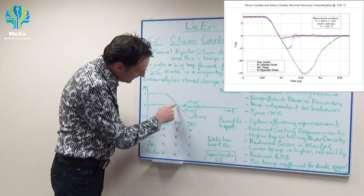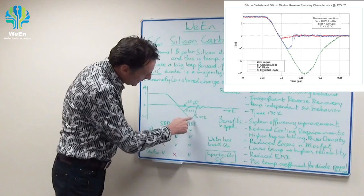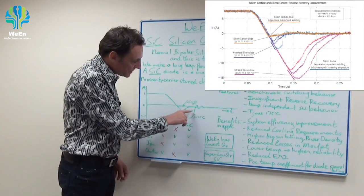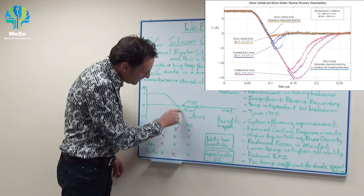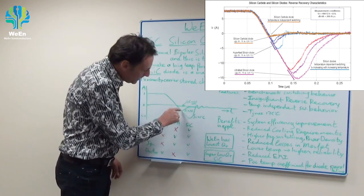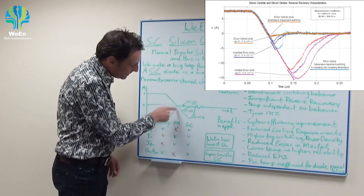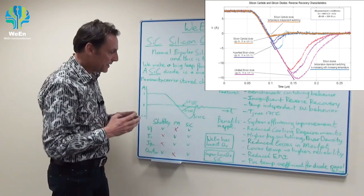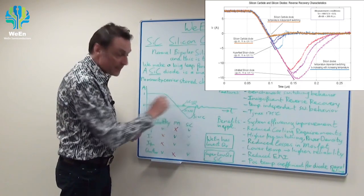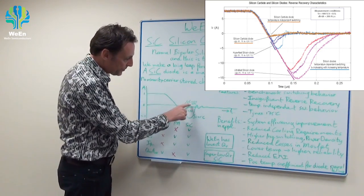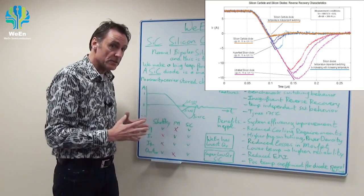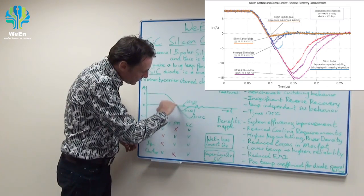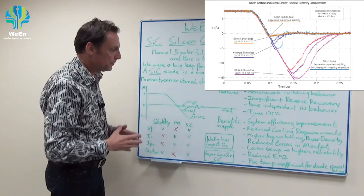The silicon diode will switch off, and there is a lot of overshoot, then oscillations. At 25 degrees Celsius, the silicon part is better — it will switch with less reverse recovery current and less reverse recovery time. But silicon carbide is much, much better and temperature independent. For both 25 degrees and 125 degrees, the line is almost zero — so the reverse recovery is much, much better.